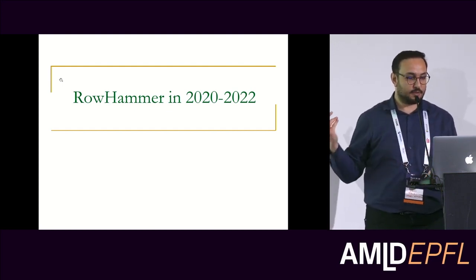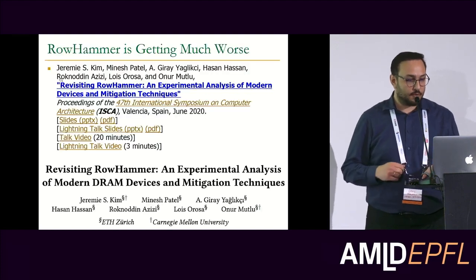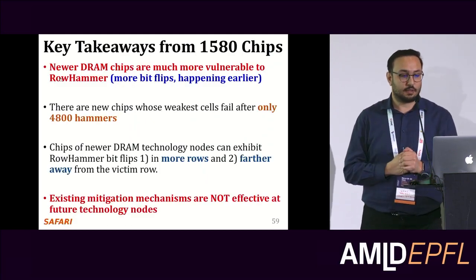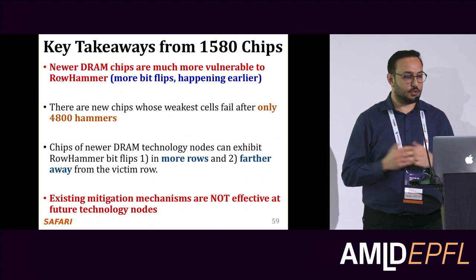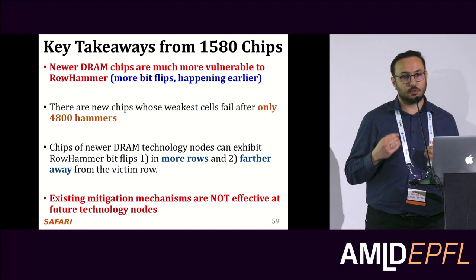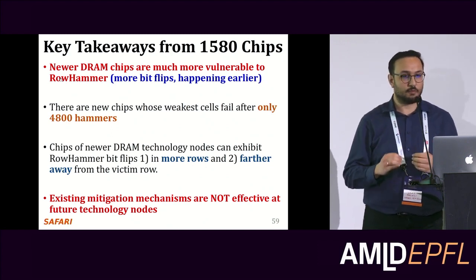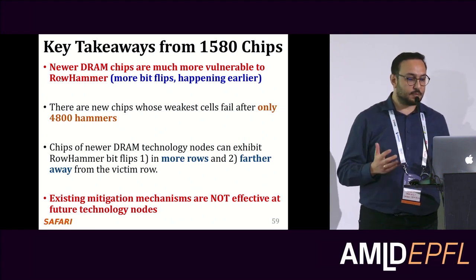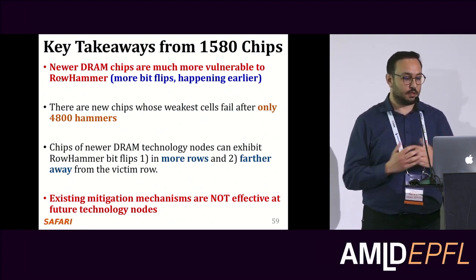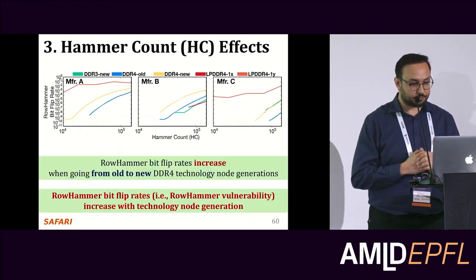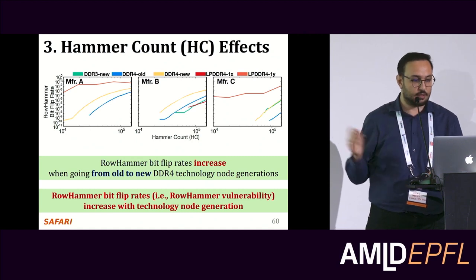Now let's talk about the recent works published in the last two years. One of them is Revisiting Rowhammer, published in ISCA 2020. What we show here is that newer DRAM chips are much more vulnerable to Rowhammer. You can now induce Rowhammer with very few activation counts, and when you do, you can affect many more rows. Existing mitigation mechanisms are not effective for future technology nodes because their overheads increase drastically.